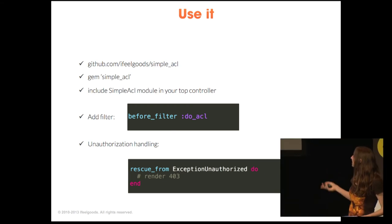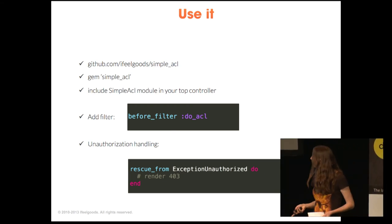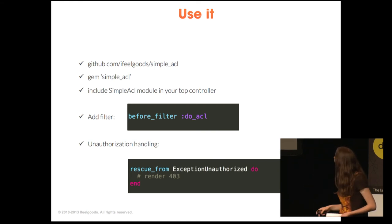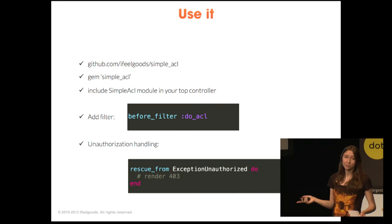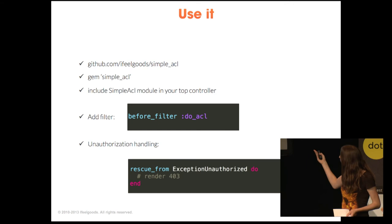You just have to install the gem and include the simple ACL module in your code, in your top controller mainly, and add some filters. And if you want to handle unauthorized exceptions, you can just do stuff like that.